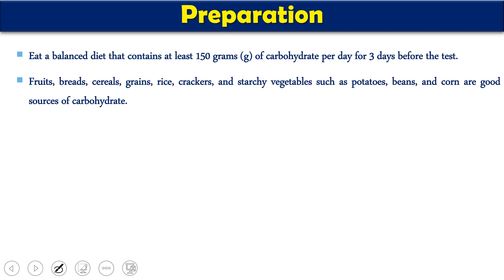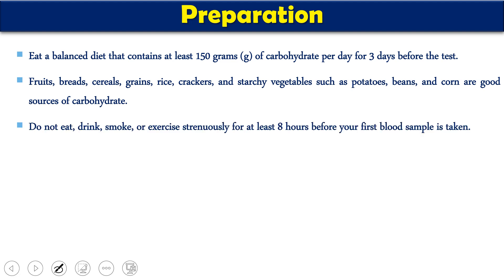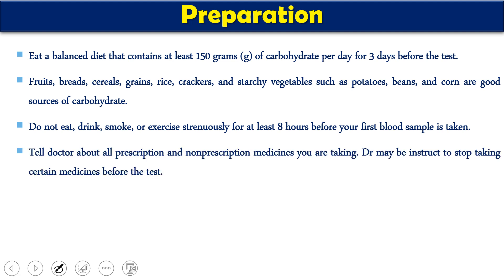First, a patient should eat a balanced diet containing roughly 150 grams of carbohydrate per day for three days before the test — eating normal food while avoiding foods high in carbohydrates, such as fruits, breads, cereals, grains, rice, and starchy vegetables like potatoes and beans, as these contain high amounts of glucose and can affect glucose metabolic processes. The patient should not drink, eat, smoke, or exercise extensively for eight hours before the test. If taking any prescribed or non-prescribed medicines, the doctor should be informed, as medicines affecting glucose metabolism may need to be stopped.